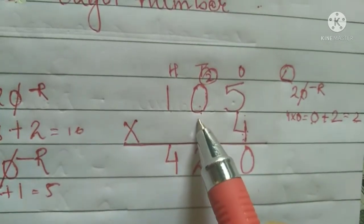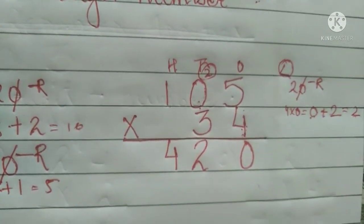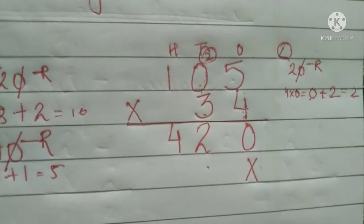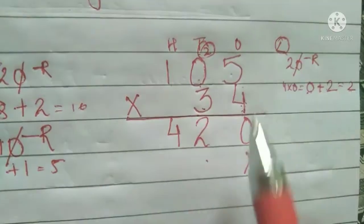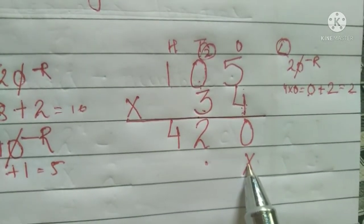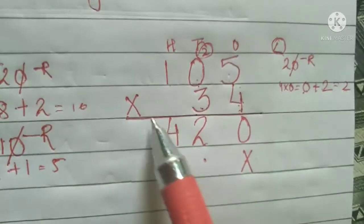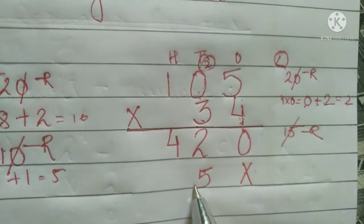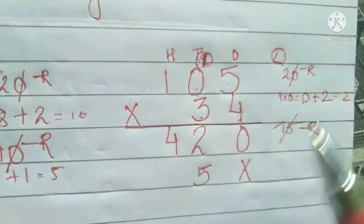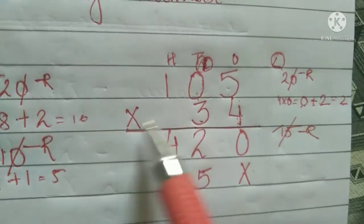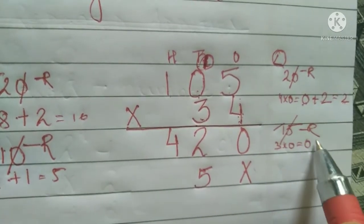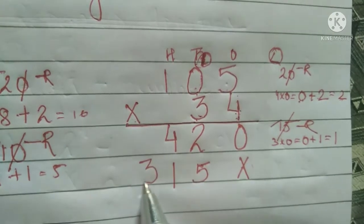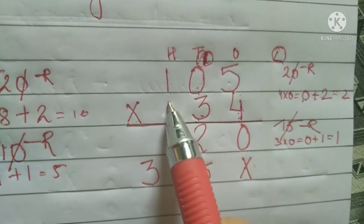Now let's try with a two-digit number — I just added three, everything else is the same. Two is at the tens place so we start from there; we've already crossed the ones side. Three times five equals fifteen — five on the right, carry one to the tens place. Three times zero equals zero, and adding one gives one, so write one here. Three times one equals three.